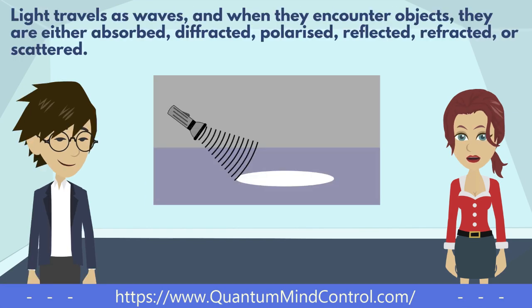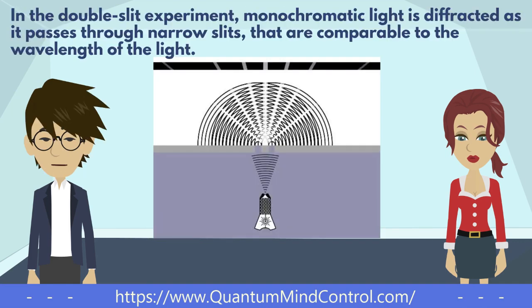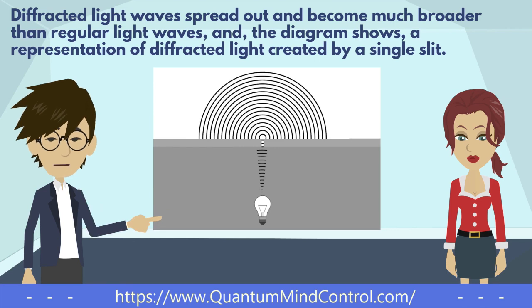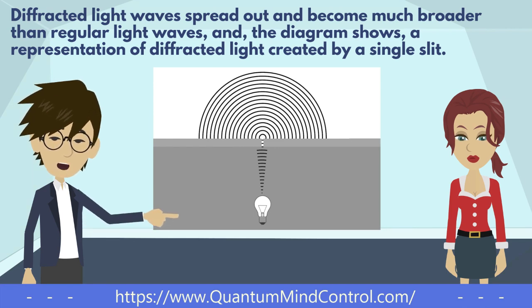Light travels as waves, and when they encounter objects, they are either absorbed, diffracted, polarized, reflected, refracted, or scattered. In the double-slit experiment, monochromatic light is diffracted as it passes through narrow slits that are comparable to the wavelength of the light. Diffracted light waves spread out and become much broader than regular light waves, and the diagram shows a representation of diffracted light created by a single slit.